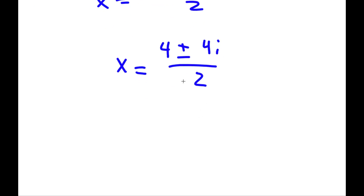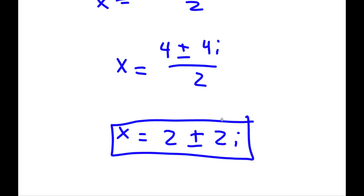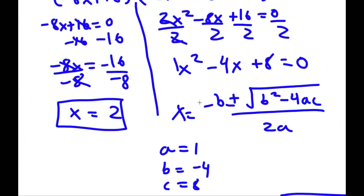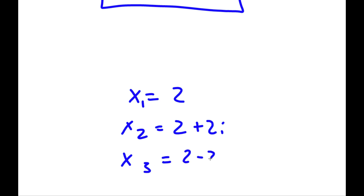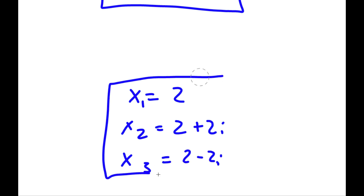Dividing both terms by 2 gives x equals 2 plus or minus 2i. So my three solutions to this problem are x equals 2, x equals 2 plus 2i, and x equals 2 minus 2i.